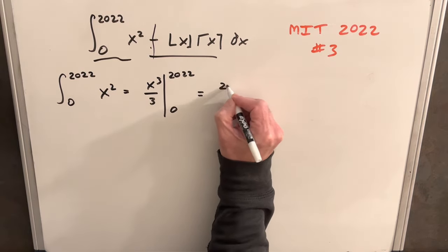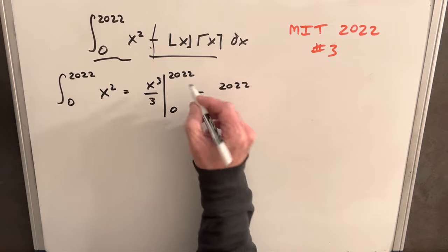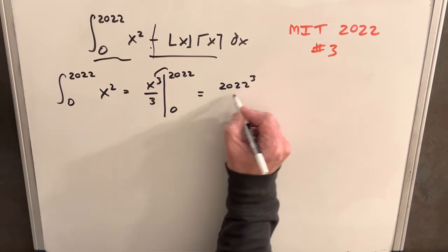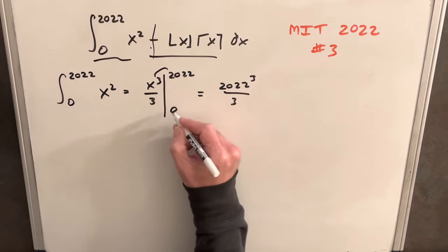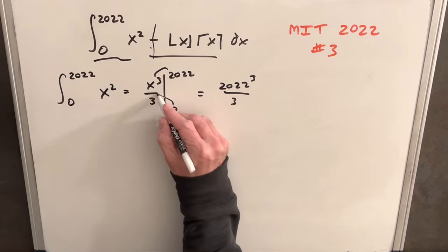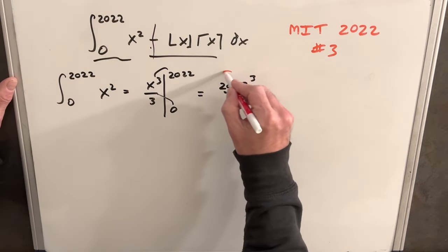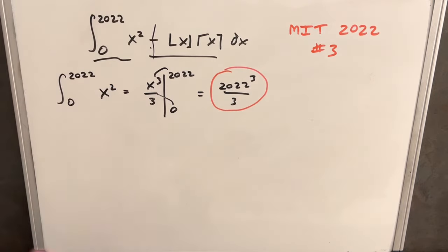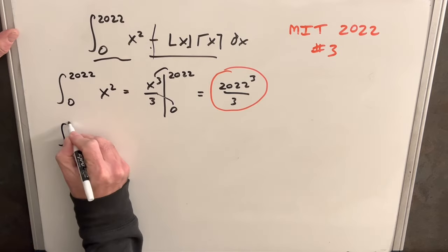We'll have from 2022 to 0, x squared. Integrating this power rule, very simple, is going to be x cubed over 3 from 2022 to 0. This is just going to be 2022 cubed over 3 minus, but when we input 0, we get 0. This is the first piece of our solution.